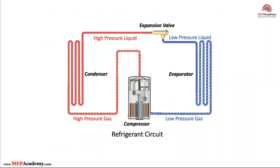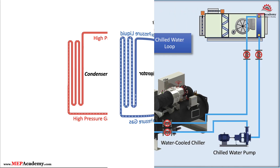Both use vapor compression or absorption refrigeration cycles for heat removal. Regarding cooling equipment, chillers, cooling towers, heat exchangers, and air handling units can be found in both applications, though their configurations may differ. Both also require efficient energy management and optimization for cost-effectiveness and sustainability.